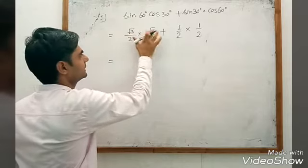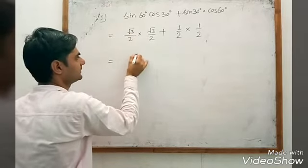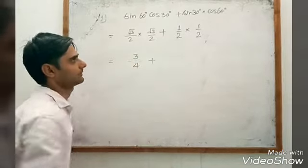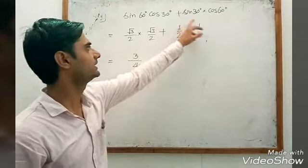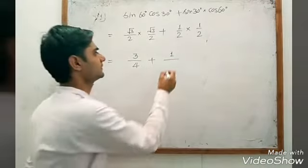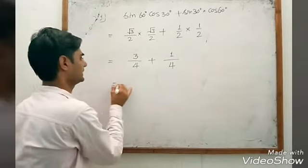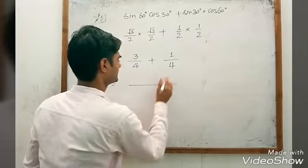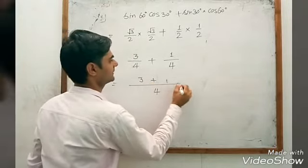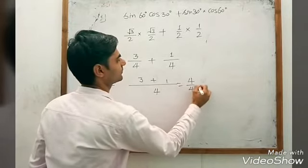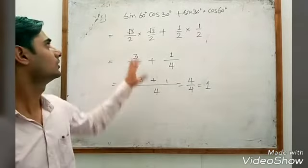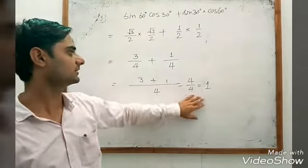Now multiplying: √3 × √3 = 3, and 2 × 2 = 4, so first term is 3/4. Second term: 1 × 1 = 1 upon 2 × 2 = 4, so 1/4. Taking LCM 4: (3 + 1)/4 = 4/4 = 1. So the value of the expression is 1.